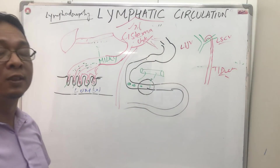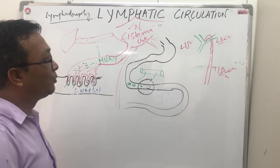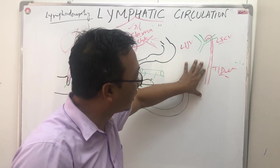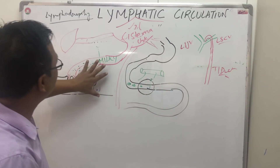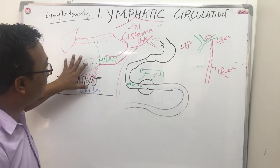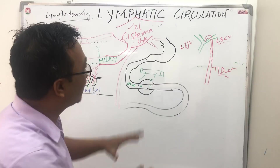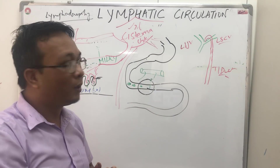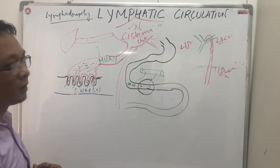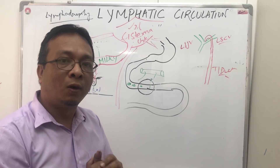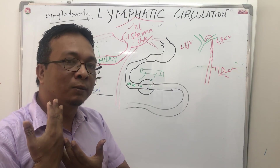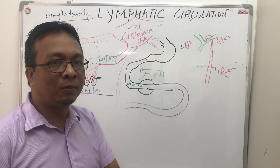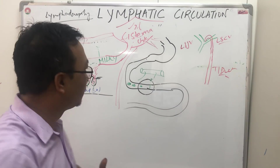The thoracic duct is also called the left lymphatic duct. The left lymphatic duct collects lymphatic fluid from the lower limbs, the digestive system, and the left side of the body. The right lymphatic duct, on the other hand, collects fluid only from the right side of the head, neck, face, right upper limb, and right side of the thorax.